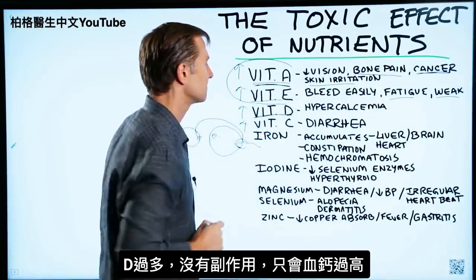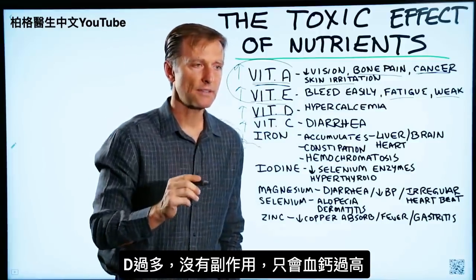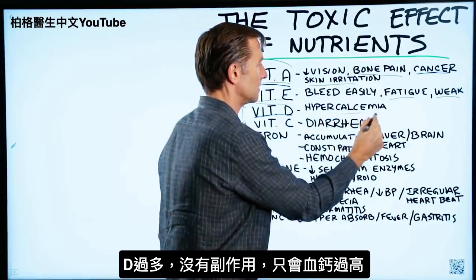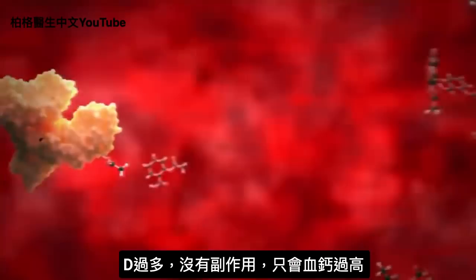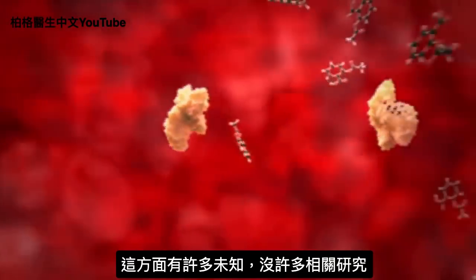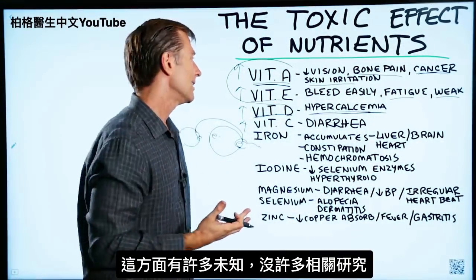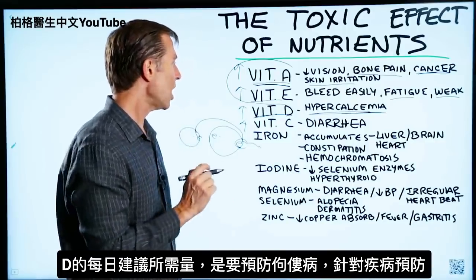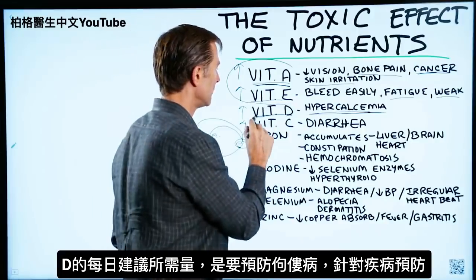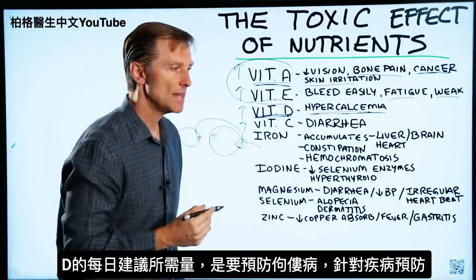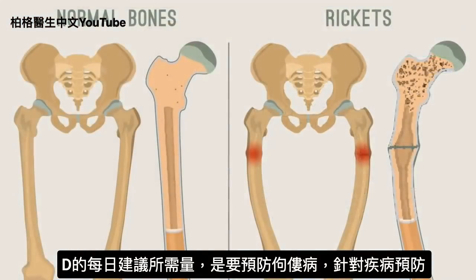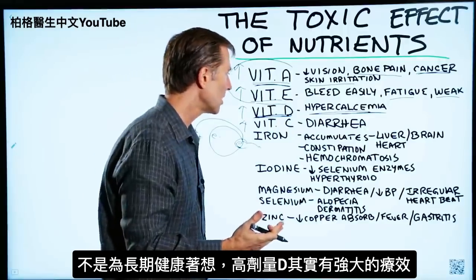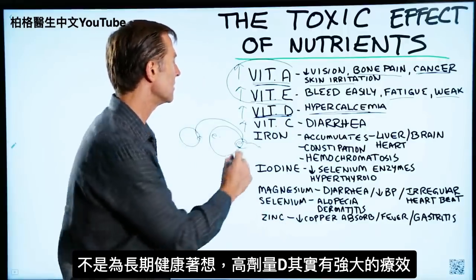With vitamin D, there really are no significant side effects from high levels other than what happens to calcium — specifically, too much calcium in the blood. Even with that, there are a lot of gray areas and not many studies, so we don't know if that's 100% true. The RDAs for vitamin D were created to prevent rickets, which is a deficiency disease — they were not designed to create long-term health or longevity.